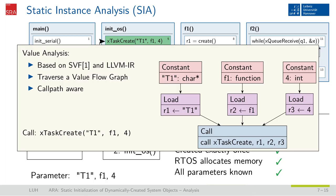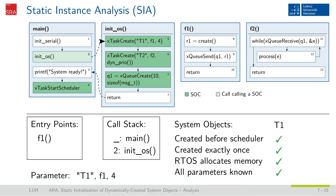For this example, we see that those parameters are all constants: the name T1, the function f1, and the value 4 as the task's priority. We denote this information in our instance list and additionally store the information that this object is created exactly once, as this is the only control flow leading towards this system call and it's surely taken. Additionally, we schedule the function f1 as a new entry point for the static instance analysis, as a task introduces a new control flow which has to be analyzed. The next instruction is the creation of task T2. For this task, the SVF cannot deliver all parameters, as the priority is computed during runtime. However, we know about the existence of this task and most of its parameters, and hence we can insert it into our instance list and push its function onto our list of entry points.